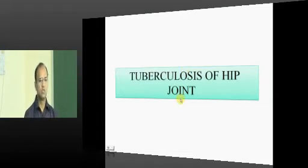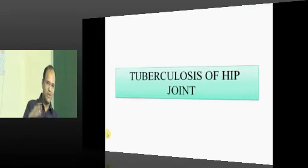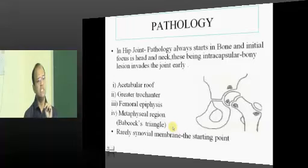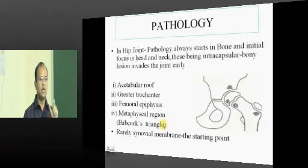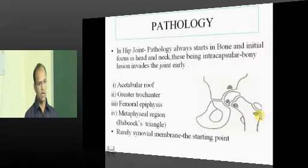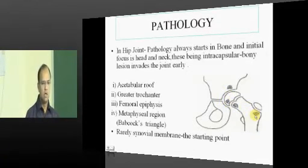That is all about tuberculosis of the spine. Now let us go into the specifics of tuberculosis of the hip joint. The tuberculosis of the hip joint specifically affects the bony part, and the starting pathology can be seen either at the acetabular roof, at the epiphysis, at Babcock's triangle in the neck, or at the greater trochanter. If at the greater trochanter there will be tubercular greater trochanter bursitis. If in and around the metaphysis or epiphysis it will cause tuberculosis arthritis. We are more bothered about tuberculosis arthritis of the hip joint.